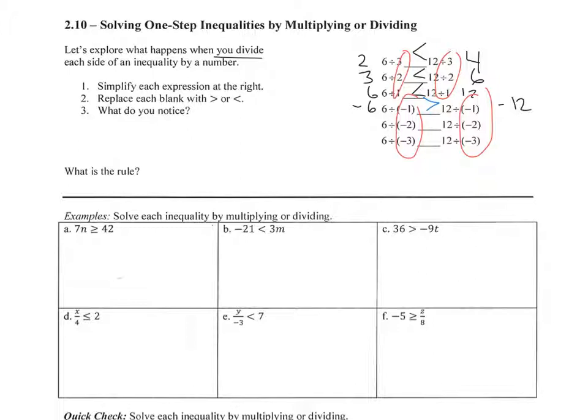And then if I divide 6 by negative 2, I get negative 3. And 12 by negative 2, I get negative 6. Well, negative 3 is greater. And the last line, I'm going to get negative 2 and negative 4.